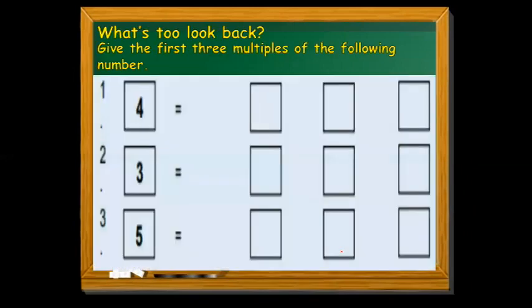So let's have an exercise. What's to look back? Give the first 3 multiples of the following numbers. We have 3 given numbers: 4, 3, and 5. We're going to find the first 3 multiples of each number.